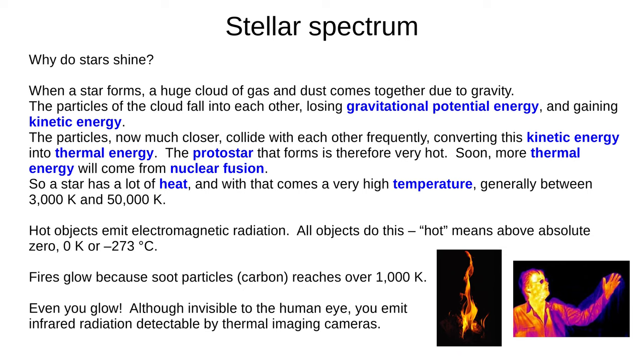Now we're going to take a closer look at starlight, starting with why stars shine. A star forms when a huge cloud of gas and dust comes together by gravitational attraction. The cloud begins with lots of gravitational potential energy. As it collapses, gravitational potential energy turns into kinetic energy. The close, fast-moving particles collide frequently, turning kinetic energy into thermal energy, a very hot protostar forms. And soon, nuclear fusion begins in the core, generating even more thermal energy. We'll look at star formation in more depth in a future video. For now, it's enough to know that stars reach a very high temperature, generally between about 3,000 and 50,000 Kelvin.